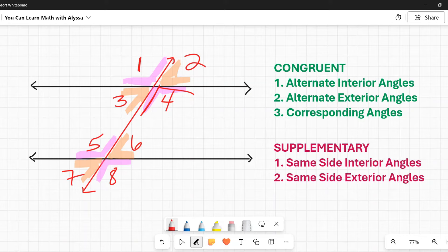When we're saying alternate exterior, again, alternate is opposite sides of the transversal. Exterior is outside the parallel lines. So the alternate exterior angles would be 1 and 8 or 2 and 7. And these pairs, again, are in the congruent category.